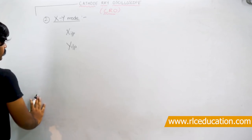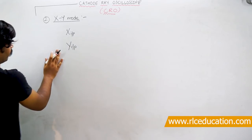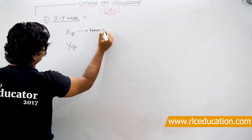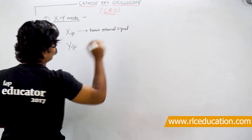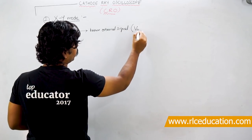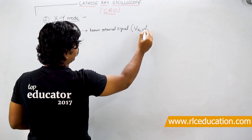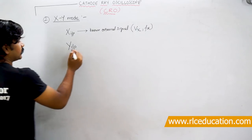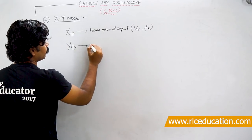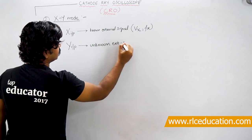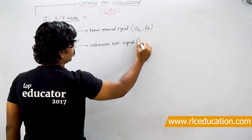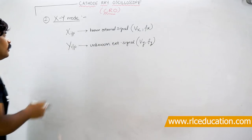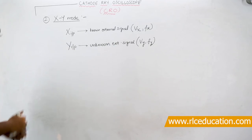The next mode of operation is called XY mode. In XY mode, a known external signal is applied to the X input - known meaning its voltage magnitude and frequency are known. To the Y input, an unknown external signal is applied, with voltage Vy and frequency Fy which are not known. That is called XY mode.